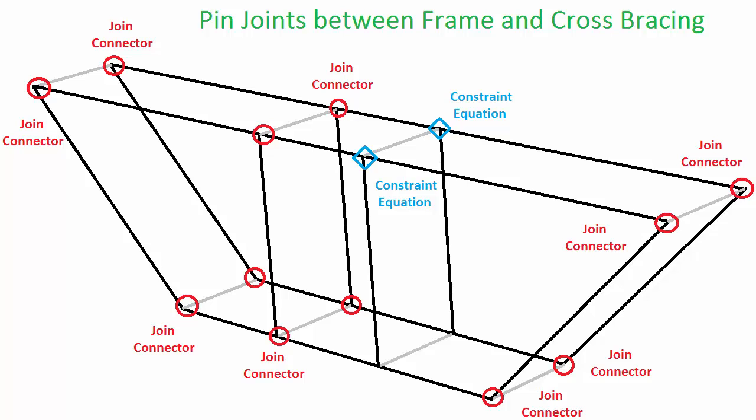The joints between the members of each frame are weld joints. We won't be specifically creating these because Abacus assumes the joints between beam elements are weld joints. We will, however, need to define the joints between the frames and the cross-bracing. We will make these pin joints. We will use connectors to define most of them, and equation constraints for the rest. So you'll see how to accomplish the same task using both connectors and equation constraints.